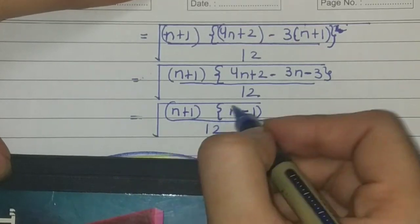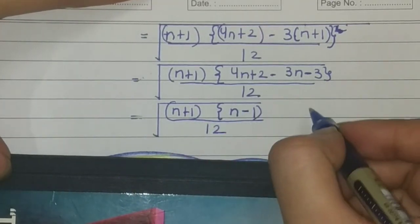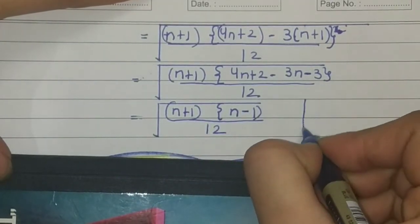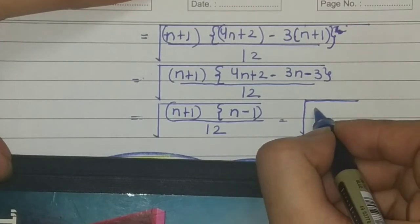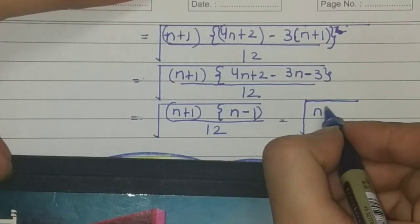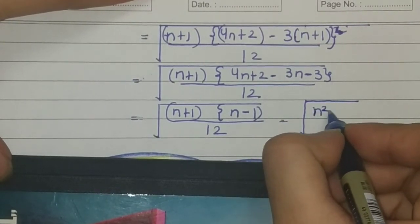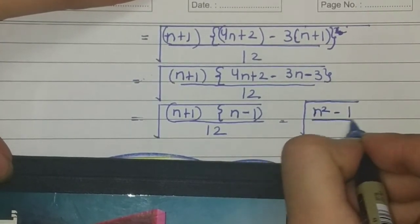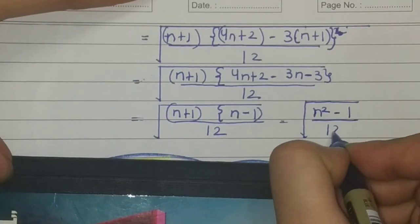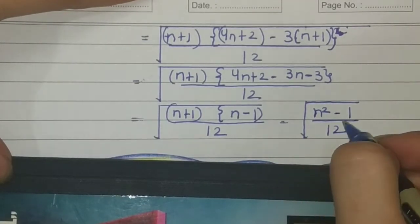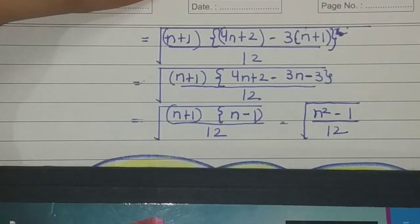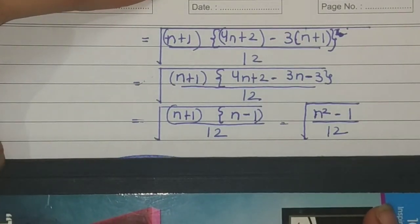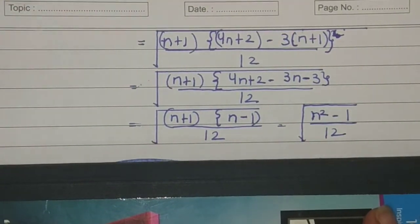Therefore, standard deviation = √((n²−1)/12). I hope the derivation is clear to you, and all the properties of standard deviation are also clear.